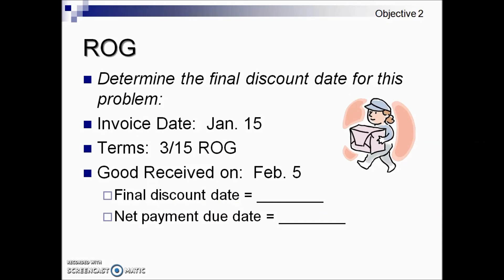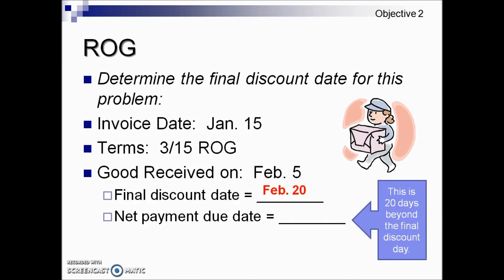In this example, they're asking us to determine the final discount date and the payment due date. We have an invoice date of January 15th. The terms, however, are ROG — receipt of goods — so we disregard the invoice date and instead use the date the shipment was received: February 5th. We add the 15 days onto February 5th, which puts us at February 20th. There is no information about the net due date, so we add 20 days onto February 20th, which turns out to be March 12th.